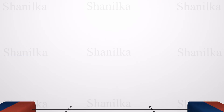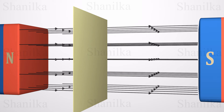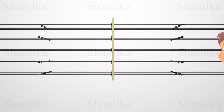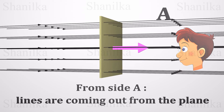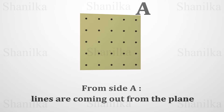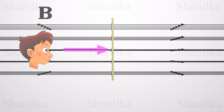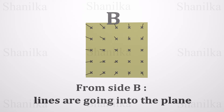Consider a uniform magnetic field and a flat plane placed perpendicular to all the field lines. If we look at side A, we see that the field lines are coming out of the plane — we use dots to represent magnetic field lines coming from the plane. If we look from side B, the field lines are going into the plane — we use an X to represent magnetic field lines going into the plane.